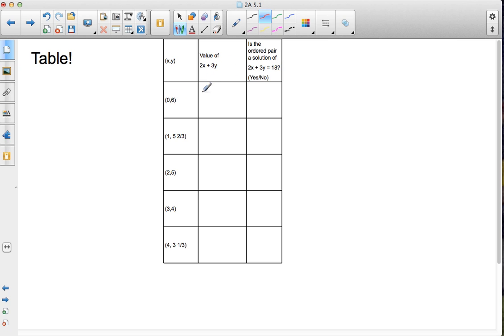So first I have some points over here. Then I'm going to see the value of 2x plus 3y. So 2 times 0 plus 3 times 6. 2 times 0 is 0 plus 3 times 6, which is 18. So I get 0 plus 18, which is 18. Then is the ordered pair a solution? Yes, it is.